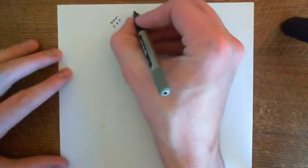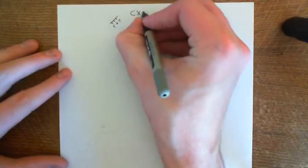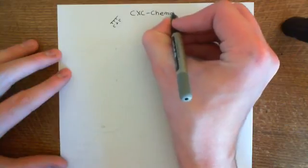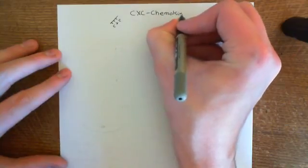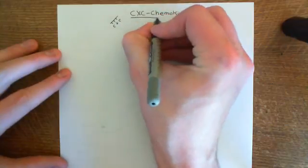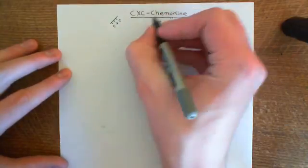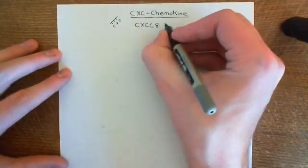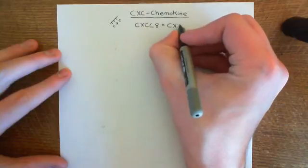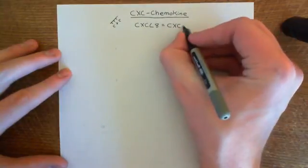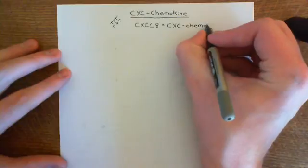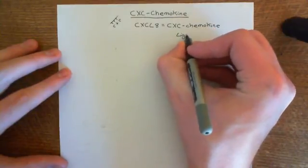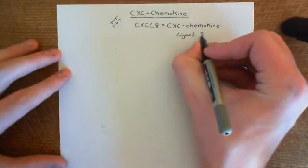Let's look at our example of a CXC chemokine. The example I have, which is a very famous one, is CXCL8. CXCL8 stands for CXC chemokine ligand 8. It has the same sort of naming system as CC chemokines — you write CXC chemokine, then ligand, then its number, which in this case is 8.